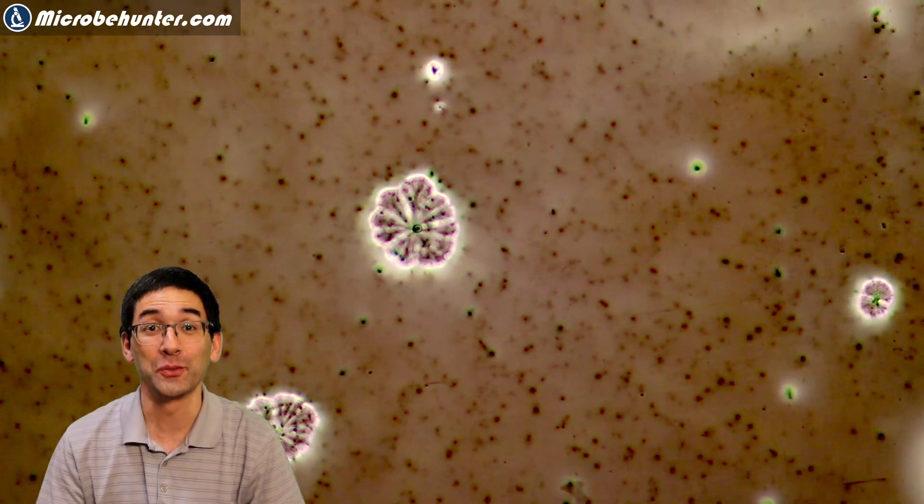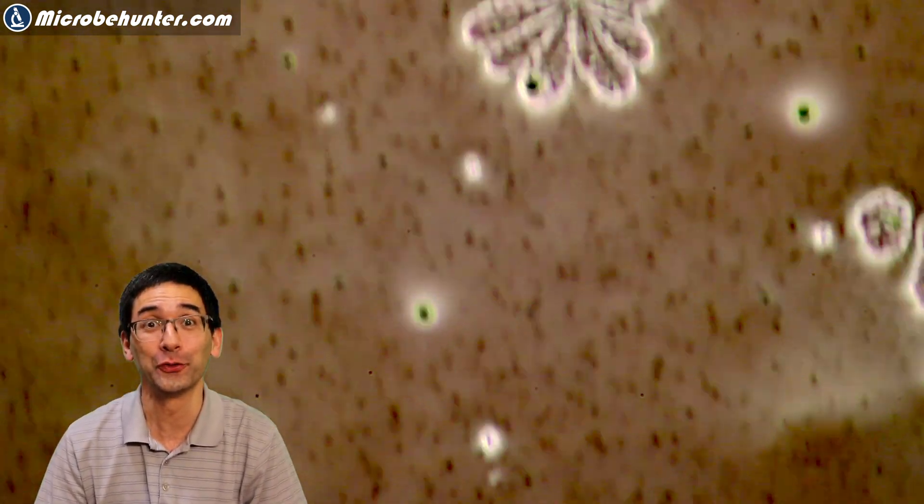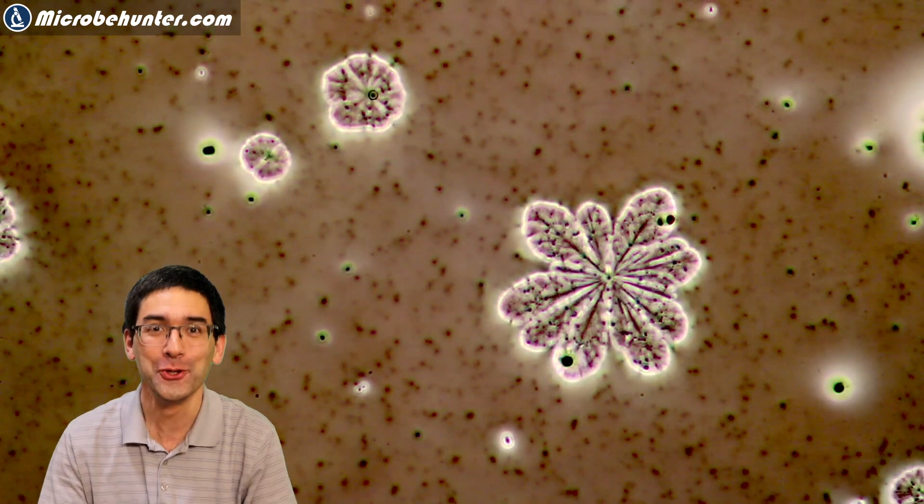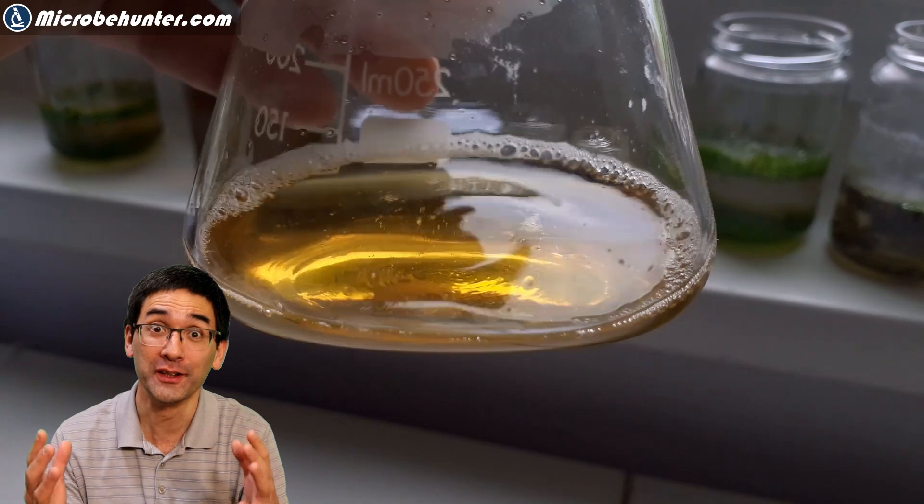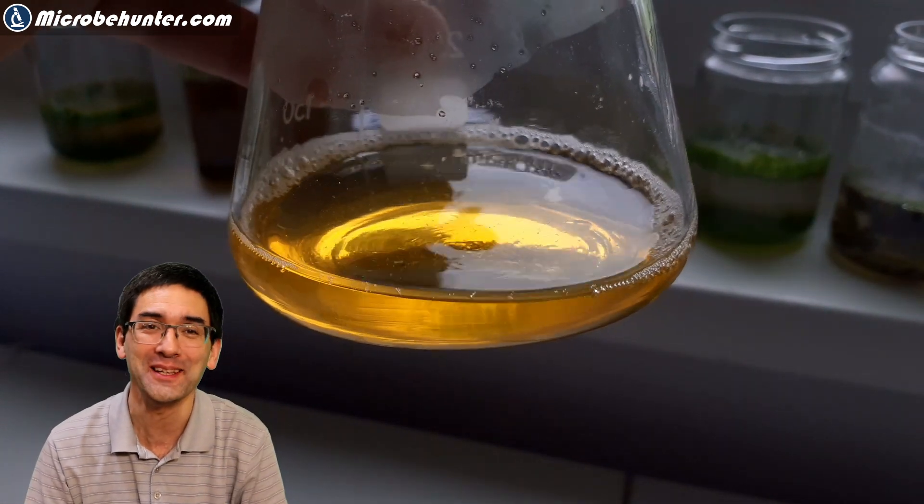These flower-shaped crystals are crystals that I got from, you won't believe it, my own urine. Later in this video I'm going to show you how I actually did this, and then you can also repeat the experiment. It's actually quite easy.